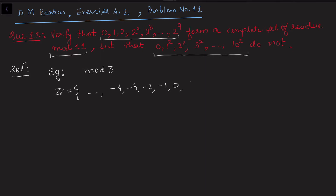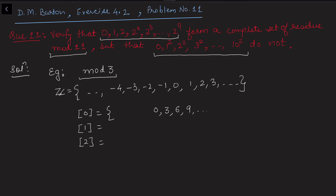Now if we consider the set of integers — these are ..., -4, -3, -2, -1, 0, 1, 2, 3, ... — when we divide integers with respect to mod 3, we can get three classes: a class of 0, meaning any number divisible by 3 leaving remainder 0; a class of 1, whenever you divide an integer by 3 it leaves remainder 1; and a class of 2. For class 0 you have all integers: ..., -9, -6, -3, 0, 3, 6, 9, ...